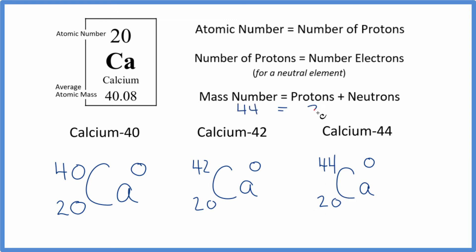So we have to have 24 neutrons here for calcium-44 for that to equal the 44 there. And you could figure out the neutrons from both of these the same way.